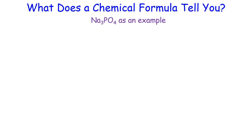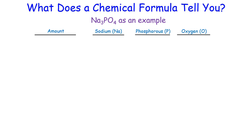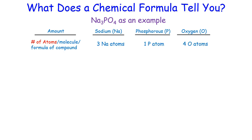Now let's look at what kind of information we can obtain from a chemical formula, using sodium phosphate as an example. The table shows different quantities for each of the three elements in the compound. First, the number of atoms in each formula unit: sodium has a subscript of 3, so there are 3 sodium atoms; phosphorus has 1 atom; and oxygen has 4 atoms.